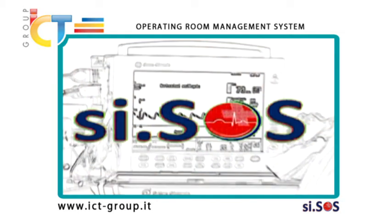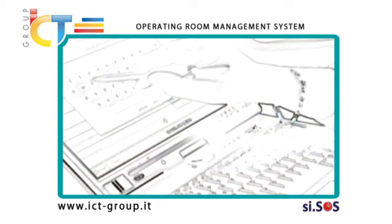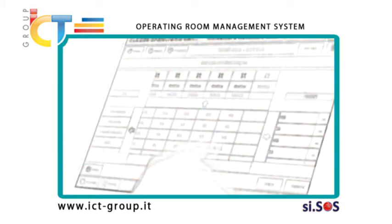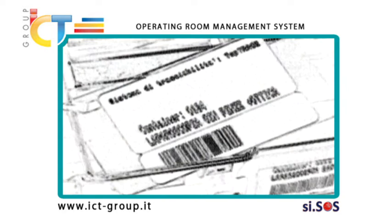CISOS is a software application for operating rooms designed to deal with surgery from their initial request up to their completion with quality, safety and transparency. The structure of the system has been designed with web technology and consists of two interfaces: one for system configuration and management, and the other for recording all activities in the operating room using a touch screen monitor.